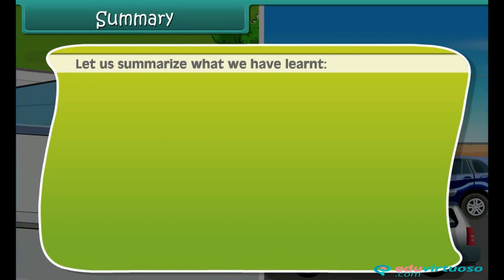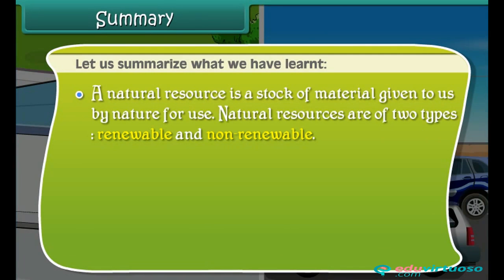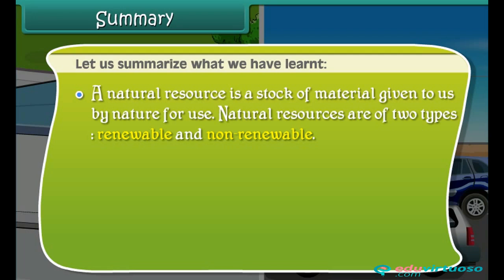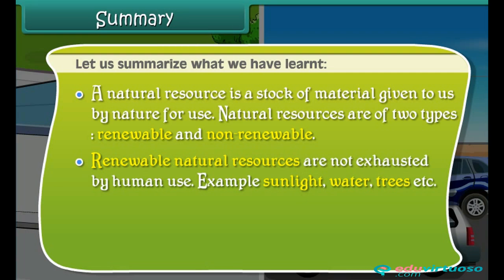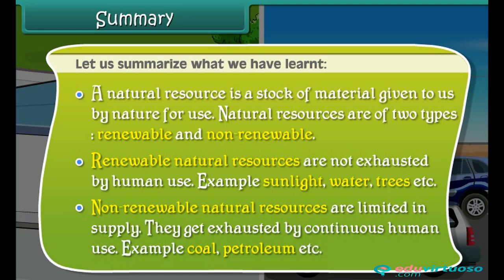Let us summarize what we have learned. A natural resource is a stock of material given to us by nature for use. Natural resources are of two types: renewable and non-renewable. Renewable natural resources are not exhausted by human use — examples include sunlight, water, and trees. Non-renewable natural resources are limited in supply and get exhausted by continuous human use — examples include coal and petroleum.